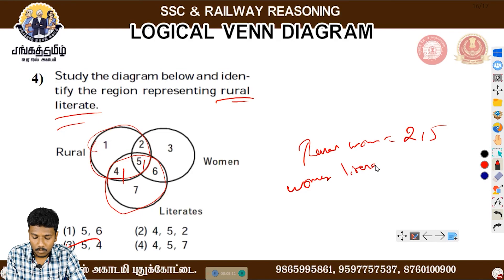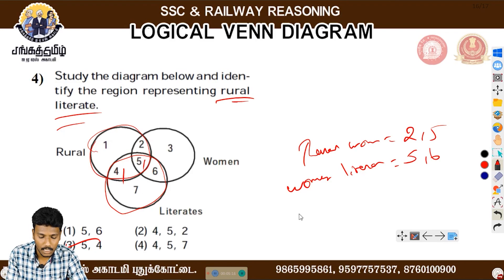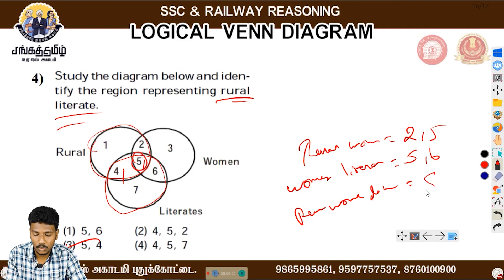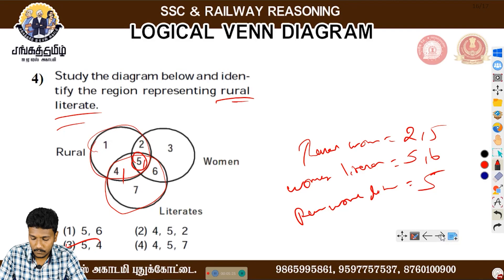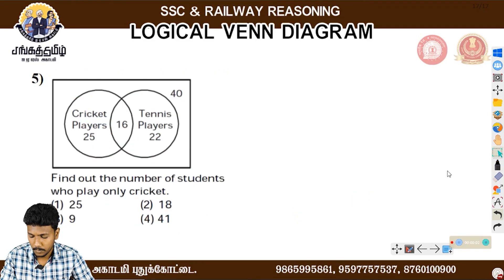If you ask about women literates, the answer is 5, 6. If you ask about all of them — rural women literates — 5 is the answer. If you are confused, you can solve it step by step.